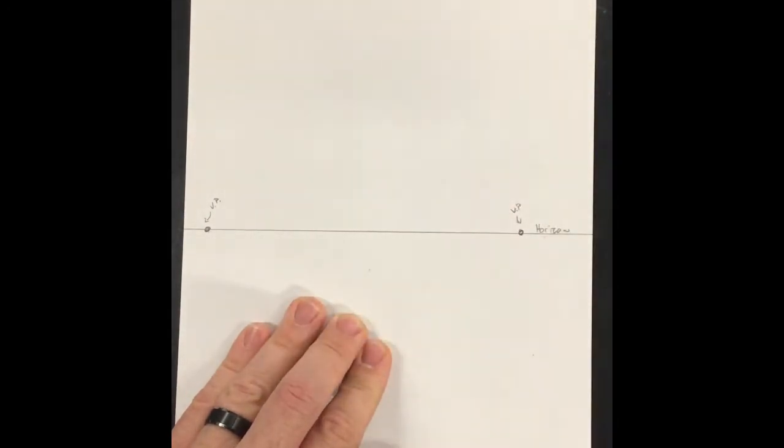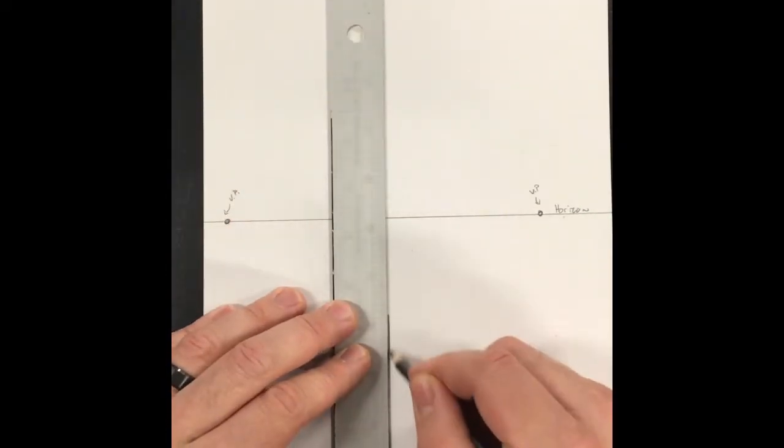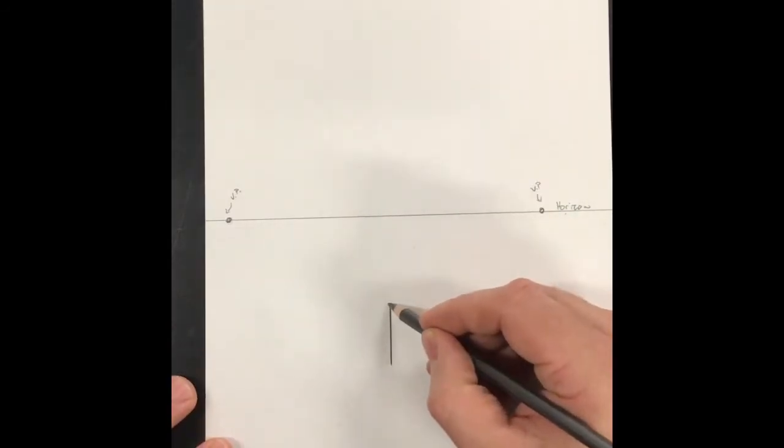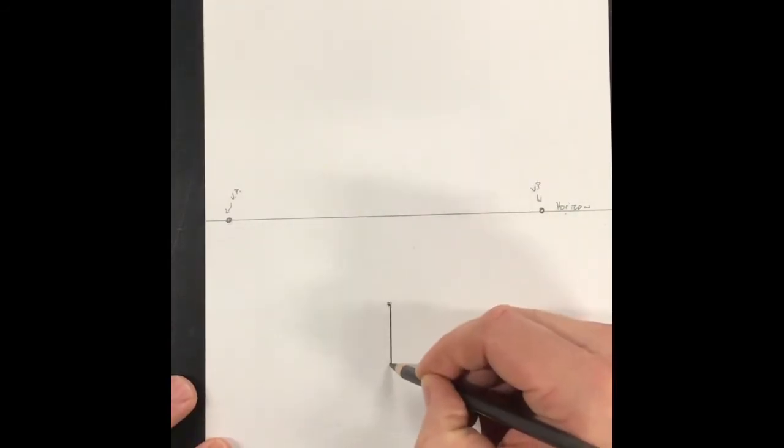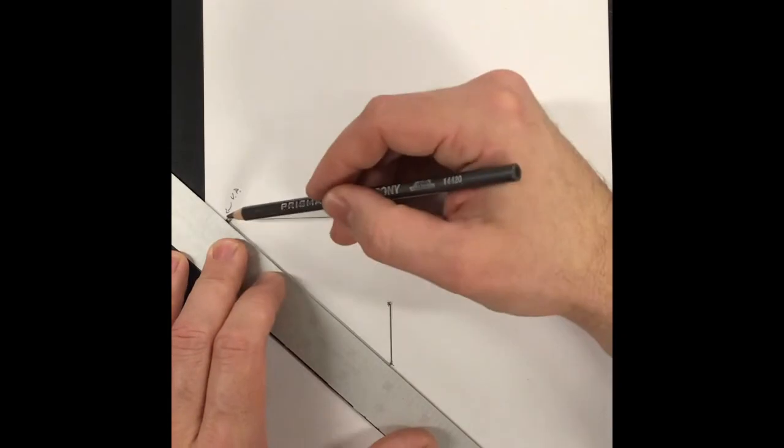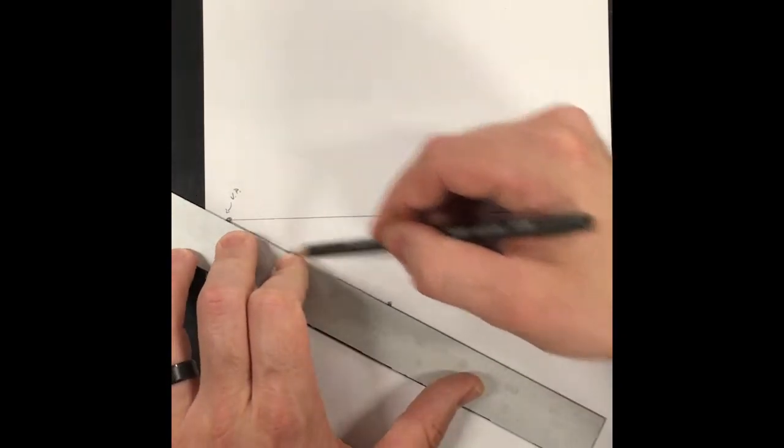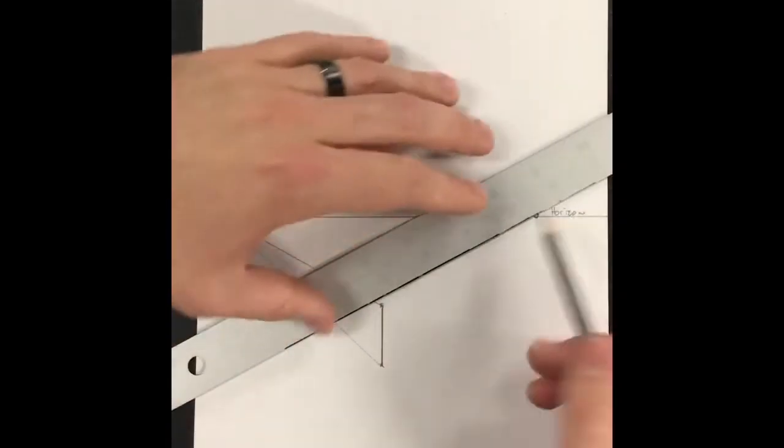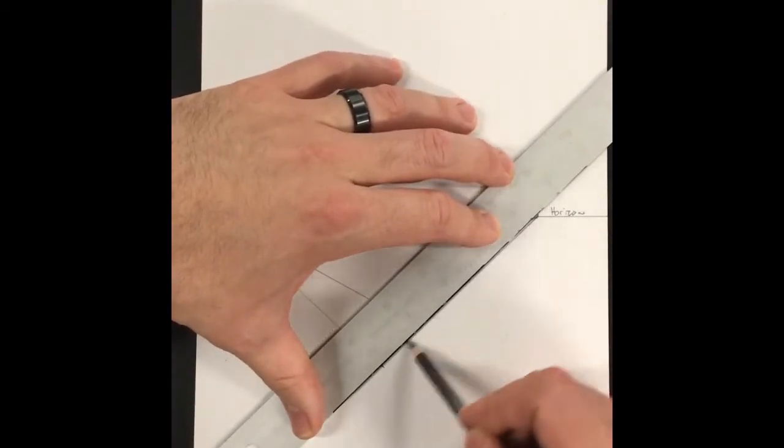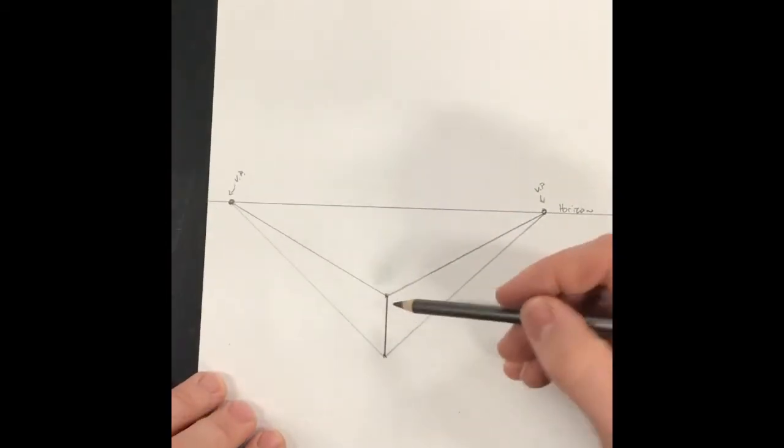Your lines are going to go to your vanishing points and create the illusion of depth on the surface. With two-point perspective, it's like we're looking at the corner of objects and seeing the sides vanish off to each point. If I start by making a vertical line down below my horizon line, and then go from the top of that line and the bottom of that line and line up with both my vanishing points, I can start to create the illusion of a cube existing in three-dimensional space on the flat surface.